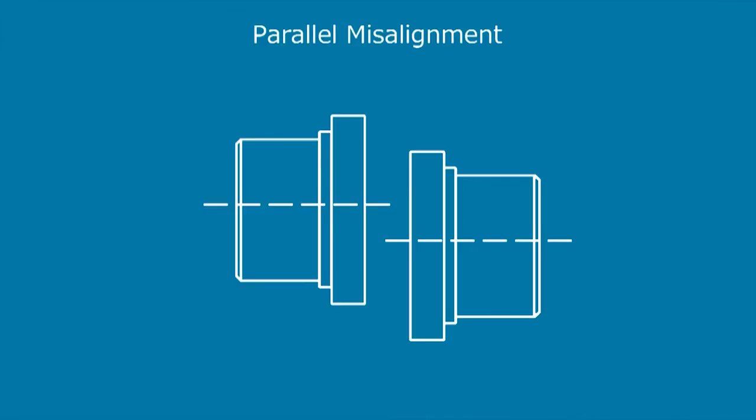Parallel misalignment occurs when the two shaft center lines are not in the same line. This could be due to height or if the two shafts are placed offset from each other.